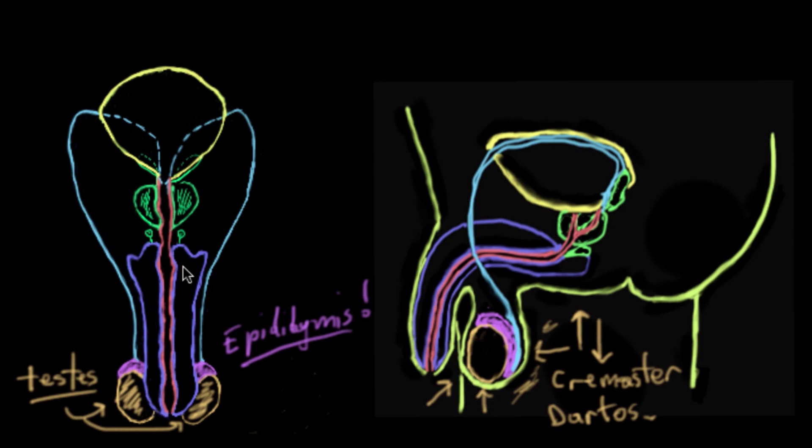The epididymis is this really long, convoluted, really wavy set of tubes that sperm sort of spends a lot of time in before it goes off on its journey. If you were going off on a journey, you'd sort of pack a few things in preparation, and sperm sort of do the same thing. When the sperm are hanging out in the epididymis, they gain more mitochondria.